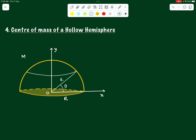We also need to take some thickness of the ring so that we can consider its area and hence find out its mass. Let us say the other edge of the ring subtends a small angle dθ at the center, so that the thickness of the ring comes out to be R dθ.